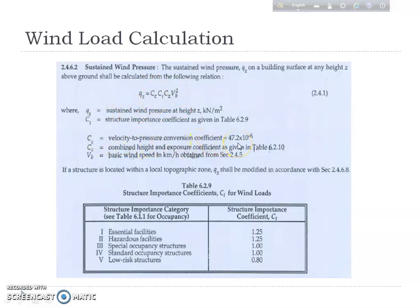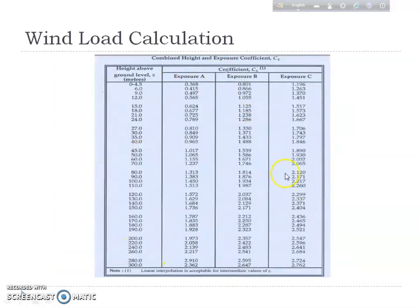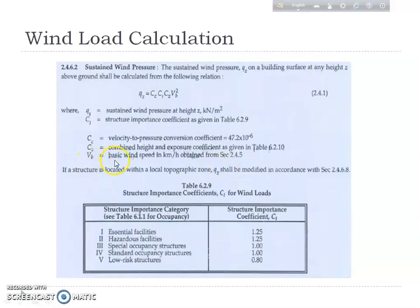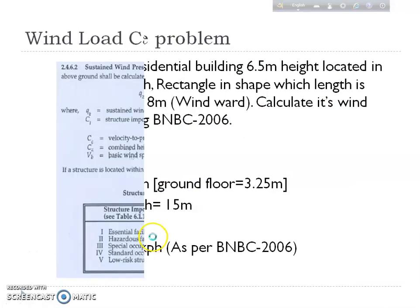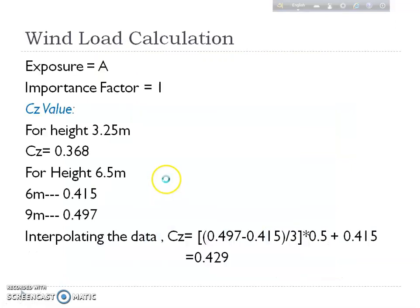CC equals 47.2 × 10⁻⁶. CI is the importance factor, which we find from the chart. CZ is the combined height and exposure coefficient, also found from the chart. VB is the basic wind speed in kilometers per hour — for Dhaka it is 210 kph.